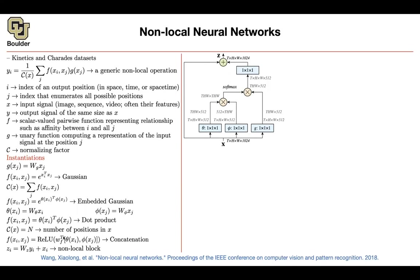You apply a row-wise softmax so everything adds up to one per row. Then you take g, flatten and reshape it, and multiply by the softmax matrix of size (T·H·W) × (T·H·W) times (T·H·W) × 512, giving a result of shape (T·H·W) × 512. This embedded Gaussian with matrix multiplication is then reshaped back. Since the result has 512 channels and you want to add a residual to the 1024-channel x, you push the output through another 1×1 convolution (W_z) to fix the dimension, then add the residual connection. This is not hard to code — it's a simple block in PyTorch, TensorFlow, or Keras.